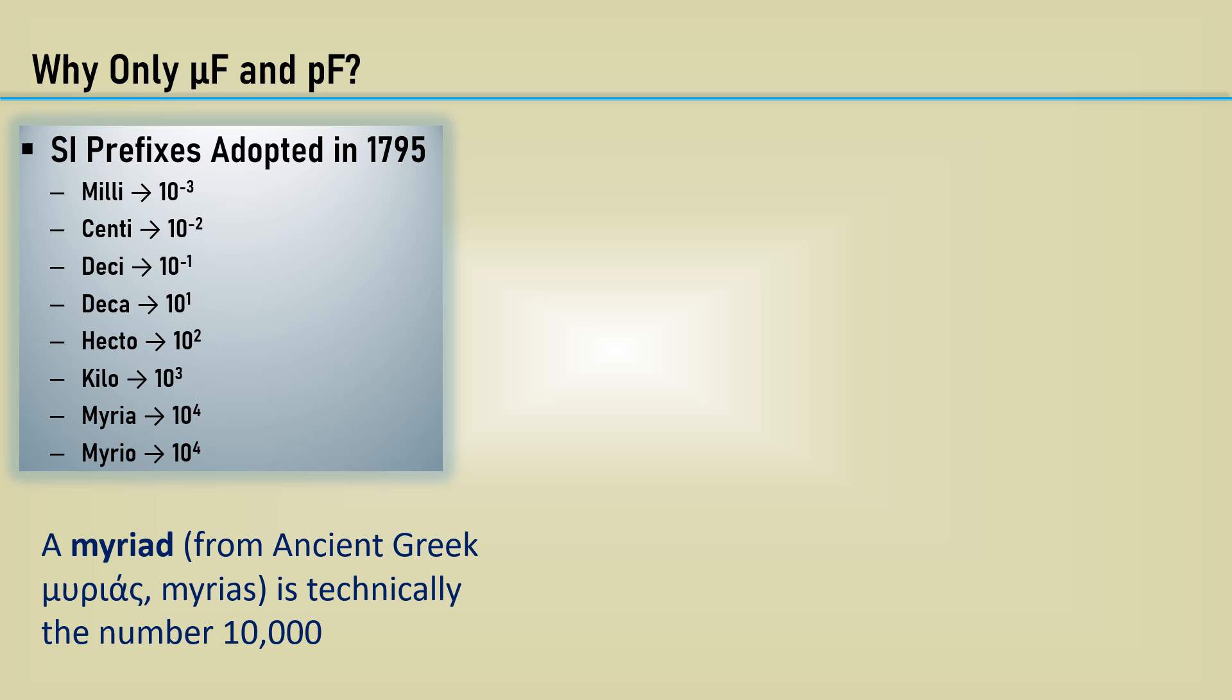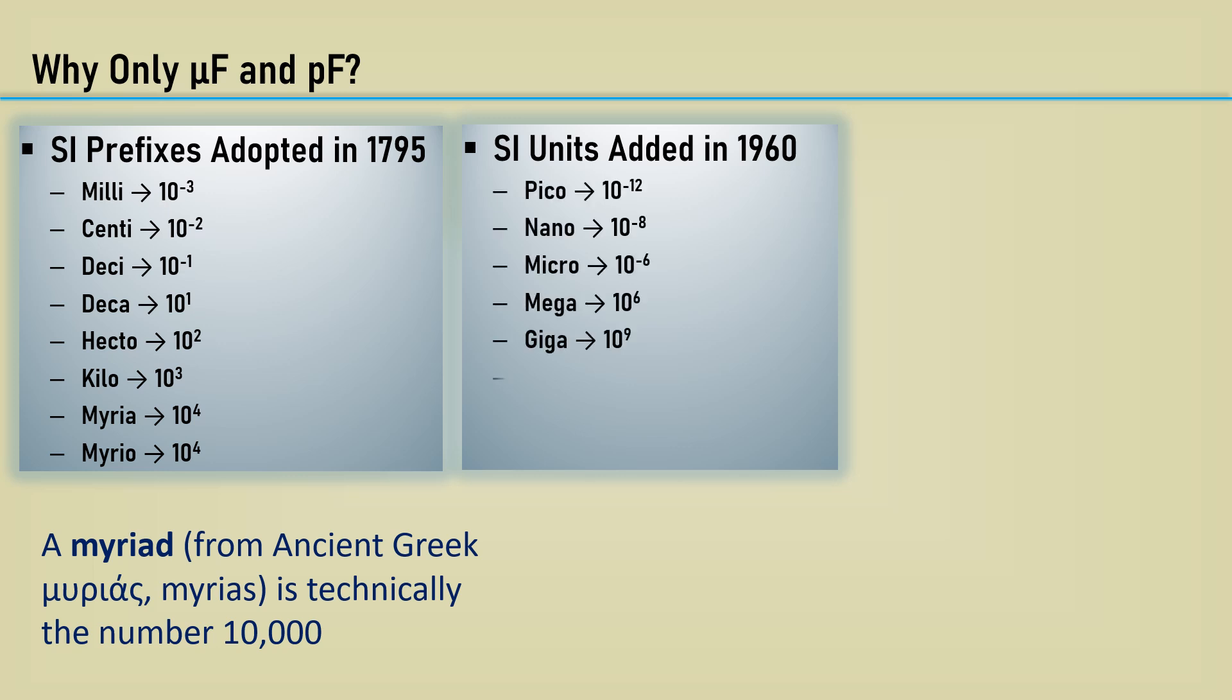Myriad is from the ancient Greek word myrias, which is technically 10,000. In 1960, another set of prefixes were officially added as SI prefixes. These include pico, nano, and micro. At that time, myria and myrio were made obsolete.